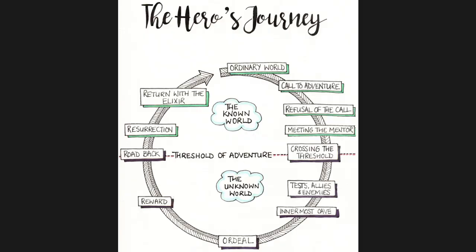In this monomyth, all protagonists follow the structure of: ordinary world, call to adventure, refusal of the call, meeting the mentor, crossing the threshold, tests allies and enemies, approach to the inmost cave, ordeal, reward, seizing the sword, the road back, resurrection, and return with the elixir.